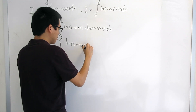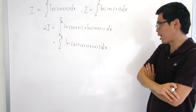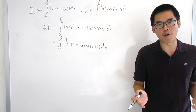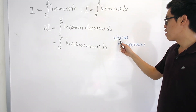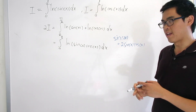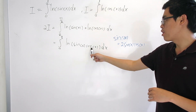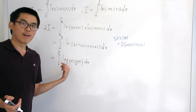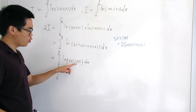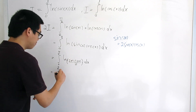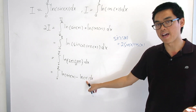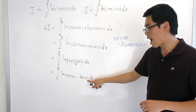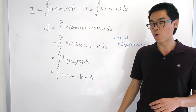When we add the two integrals, we get ln(sin x) + ln(cos x), which by the logarithm product rule equals ln(sin x · cos x). Now, sin x · cos x reminds us of the double angle formula: sin(2x) = 2 sin x cos x, so sin x cos x = sin(2x)/2. Using the log quotient rule, ln(sin(2x)/2) = ln(sin 2x) − ln 2. Since ln 2 is a constant, integrating it over [0, π/2] gives (π/2)·ln 2.